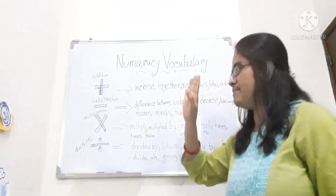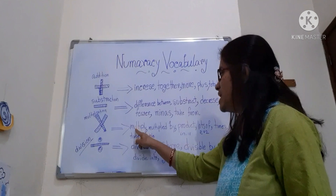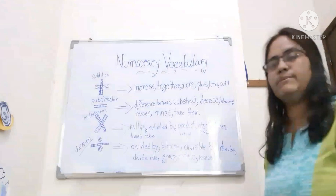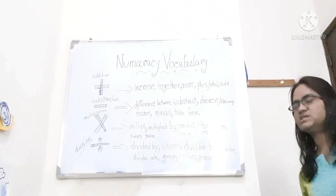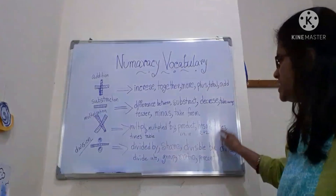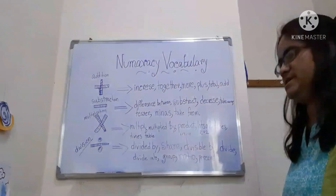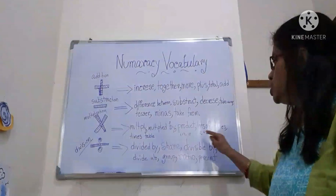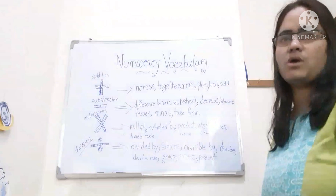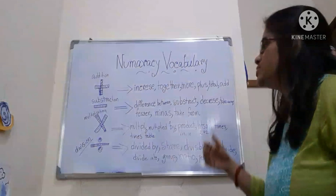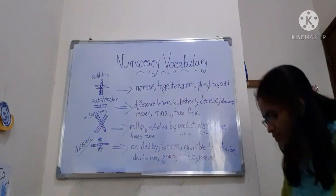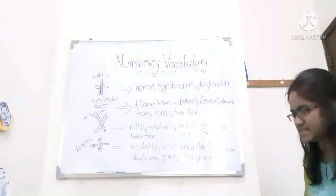Number three is multiplication. The vocabulary for multiplication is: multiply, multiply by, product, lots of, times, times table. Now, what is times? Times means — if I tell you 2 times 2, that is equal to 4. Whenever we do multiplication, we will use the word times. Understand?